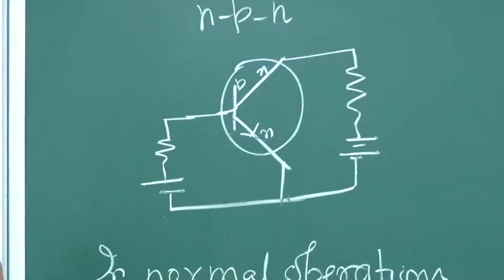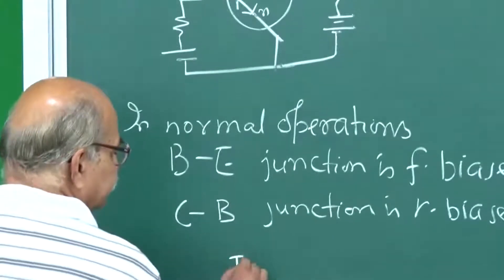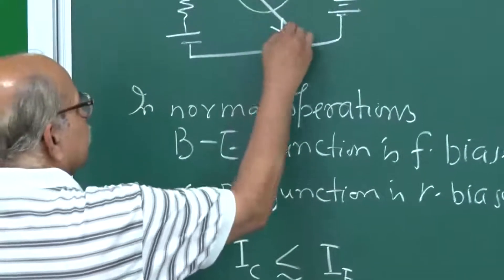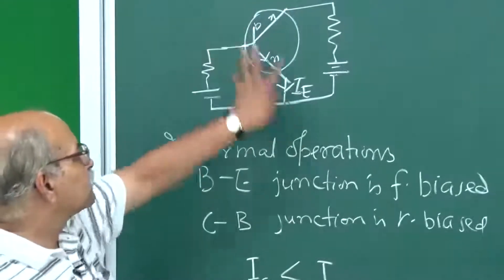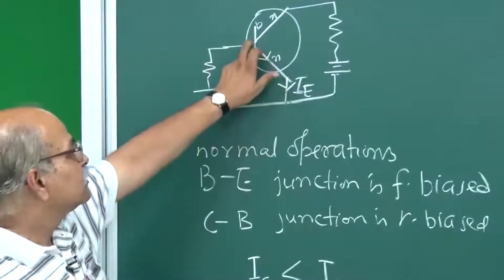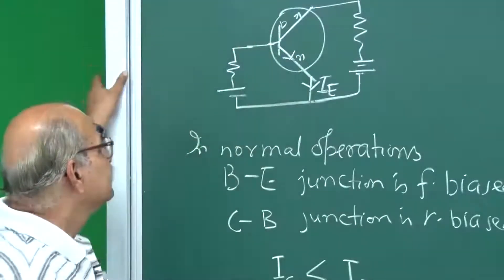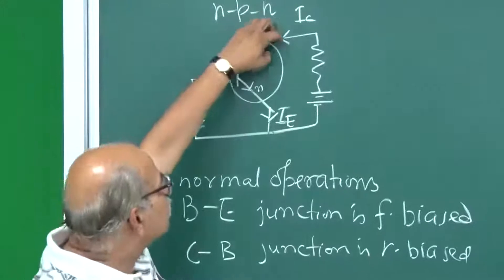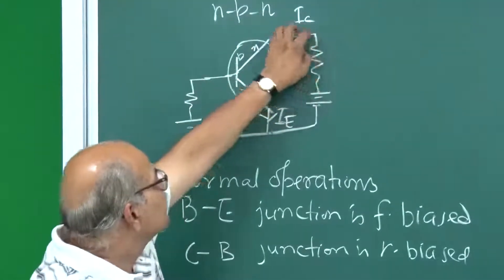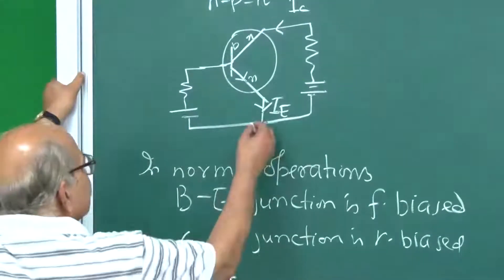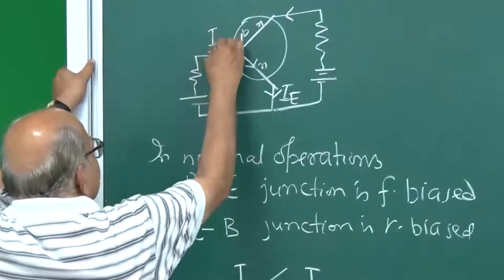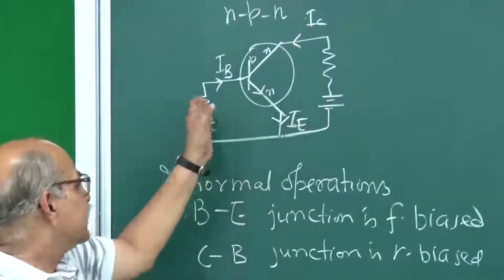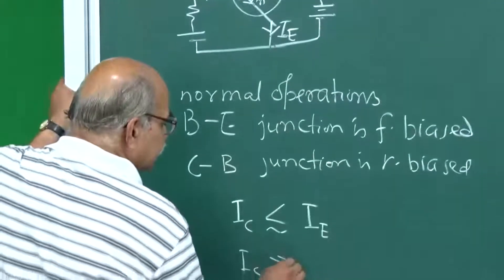A lot of electrons from this go through the collector circuit and a small fraction goes through the base — that corresponds to the recombination of holes and electrons once these electrons find themselves in this P region. So IC is less than but close to IE. The current IE corresponds to the number of electrons being injected from the N side to the P side. Then IC is this — electrons are attracted by the reverse bias, and the electrons going in the other direction constitute IB. So IC is slightly smaller than IE, and if you compare IC with IB, IC is much, much larger than IB.